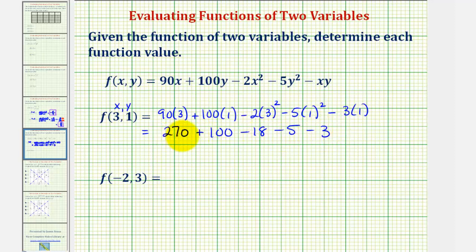So we have 270 plus 100, minus 18, minus five, minus three, which is equal to 344. So f of three comma one equals 344.